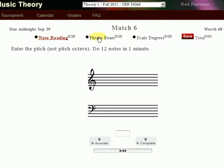Match 6 has three sections: note reading, phrase beats, and scale degrees. For note reading I have to enter in the correct note and I have one minute to enter in 12 notes correctly. I can keep going or I can stop anytime and redo it. If I run out of time, here's the timer, the test will stop. I can redo it at any time. To get maximum points I have 15 out of 20. I'm going to stop here and go on to phrase beats.